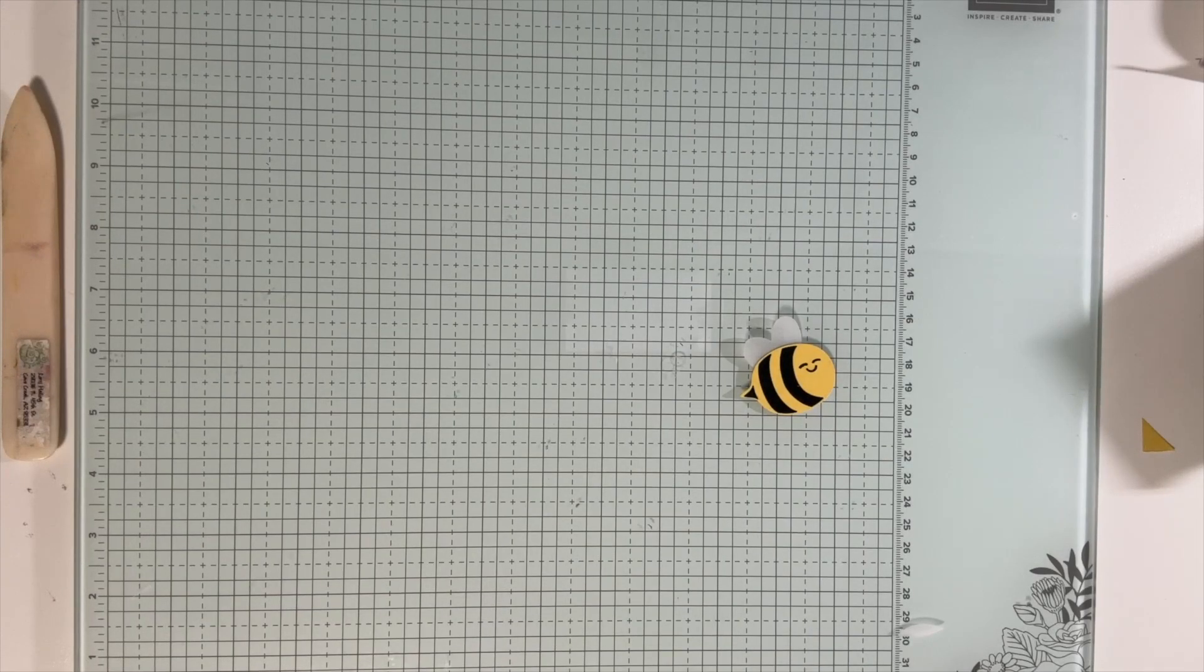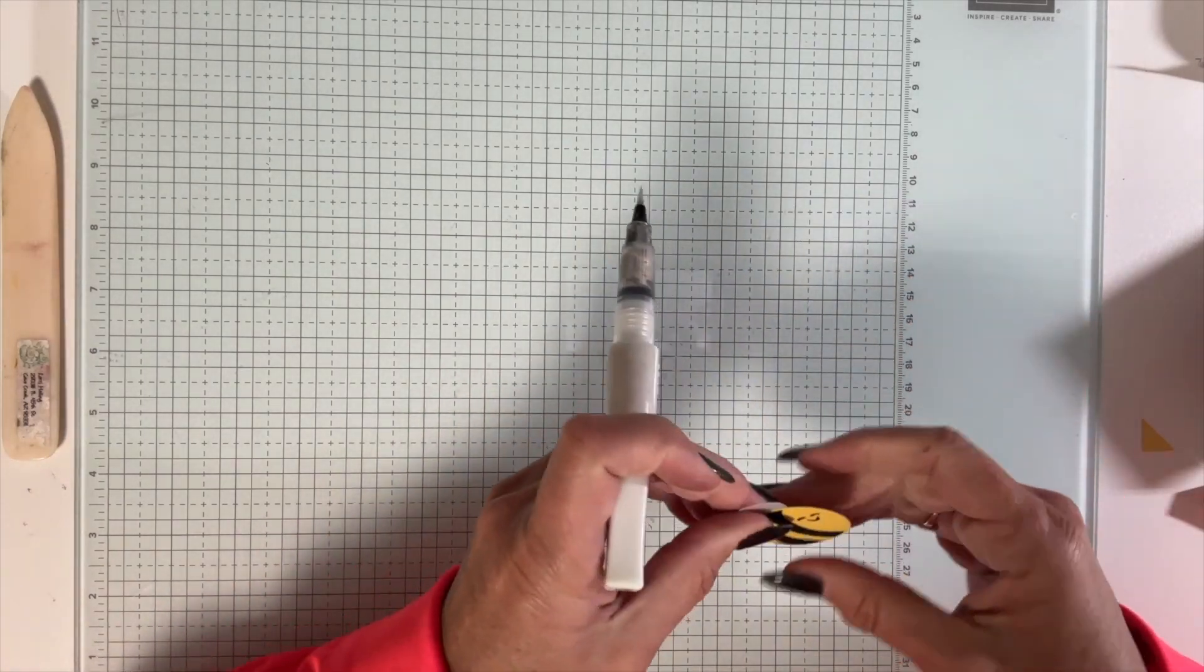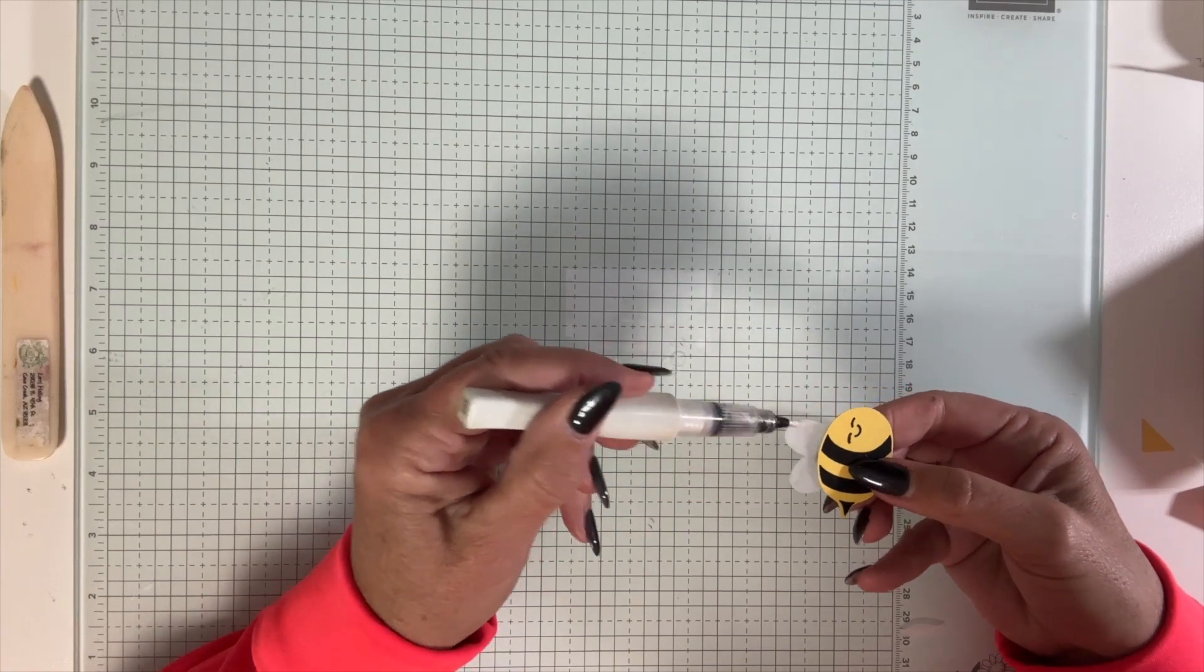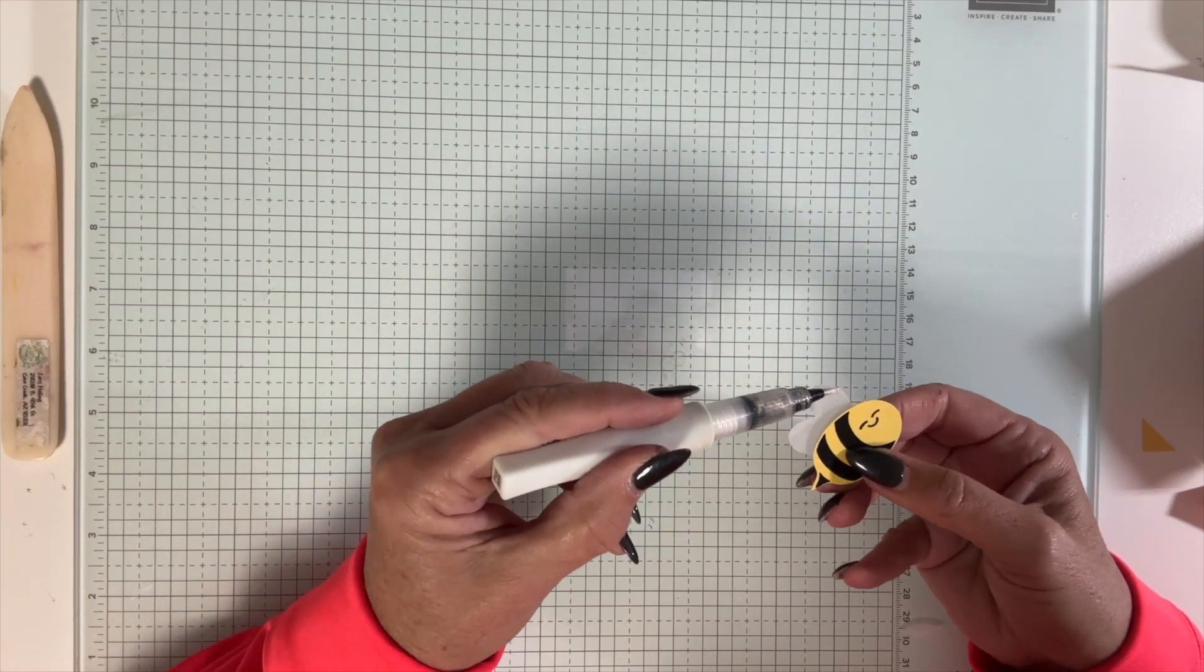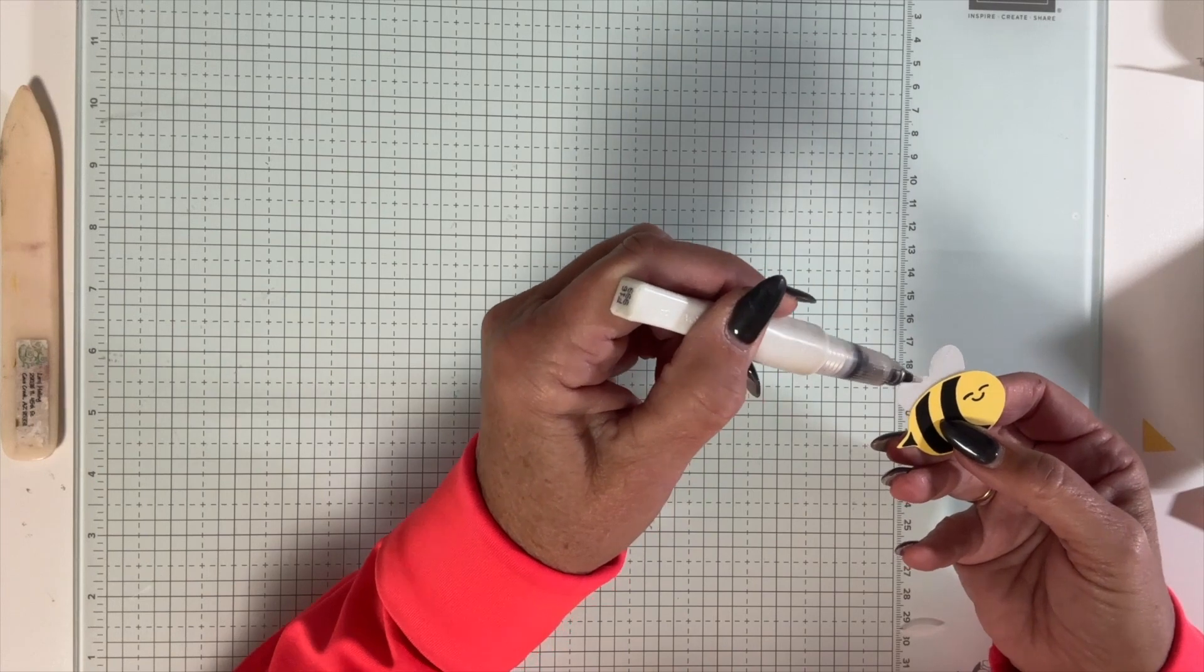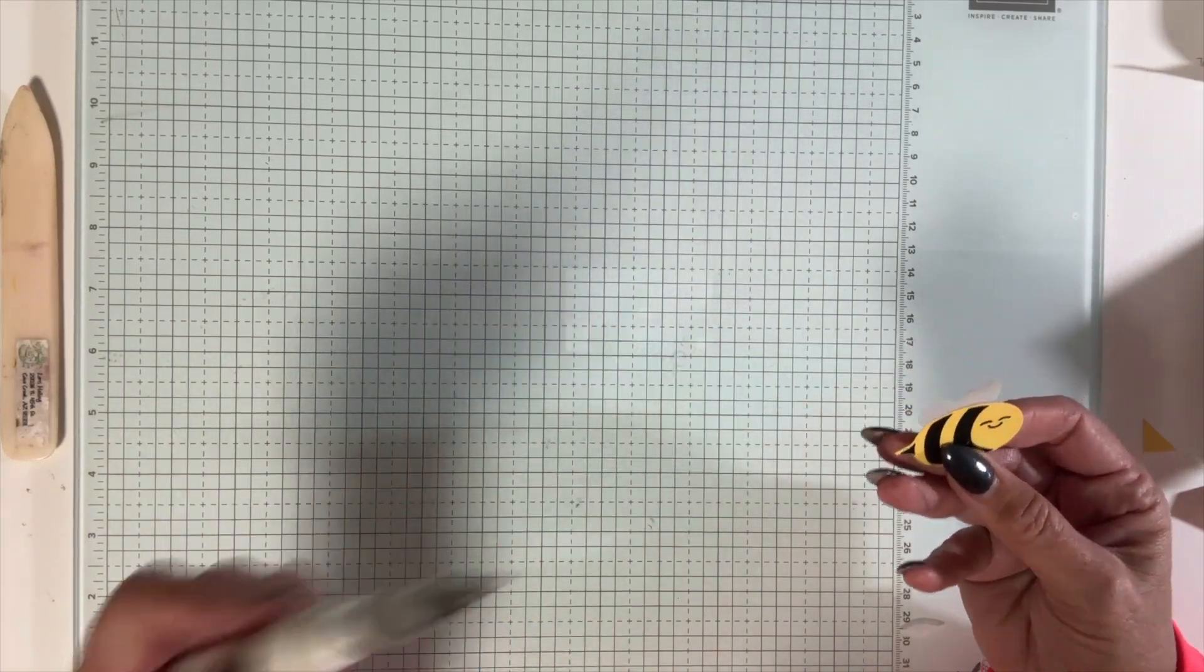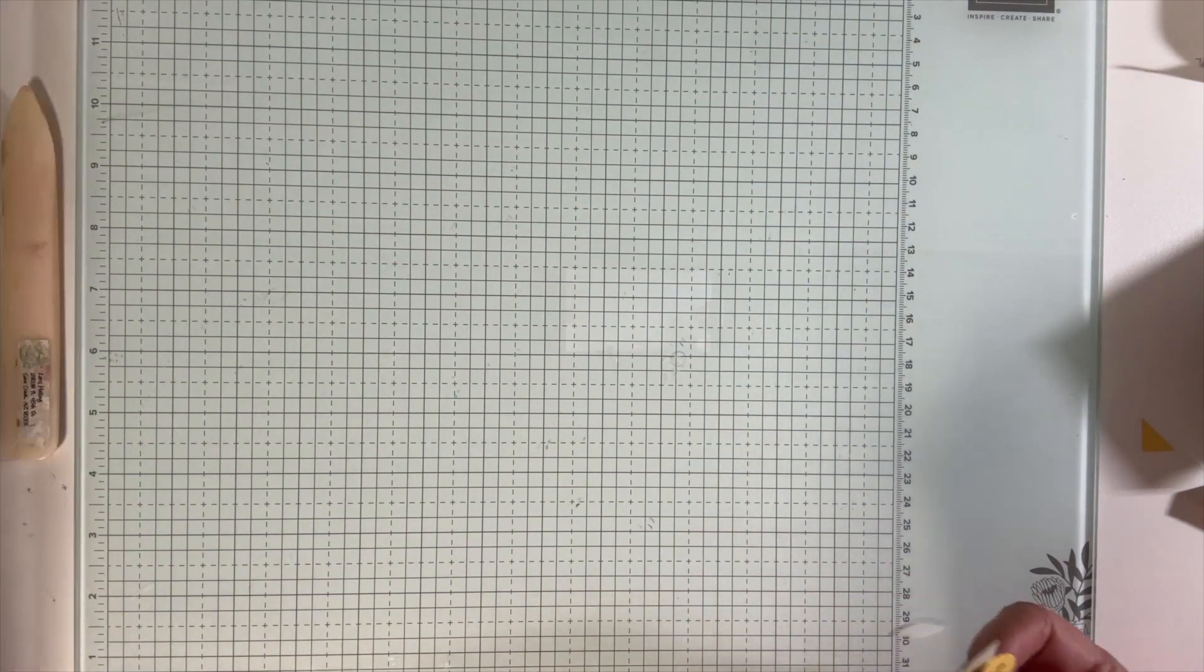Now the last thing that we're going to do, whenever I do the bee, I always make his wings more shimmery with some Wink of Stella. Let's just add some of that behind there. You can tell if you got it all on by just moving it around in the light. I feel like I got a little bit of black on there too.